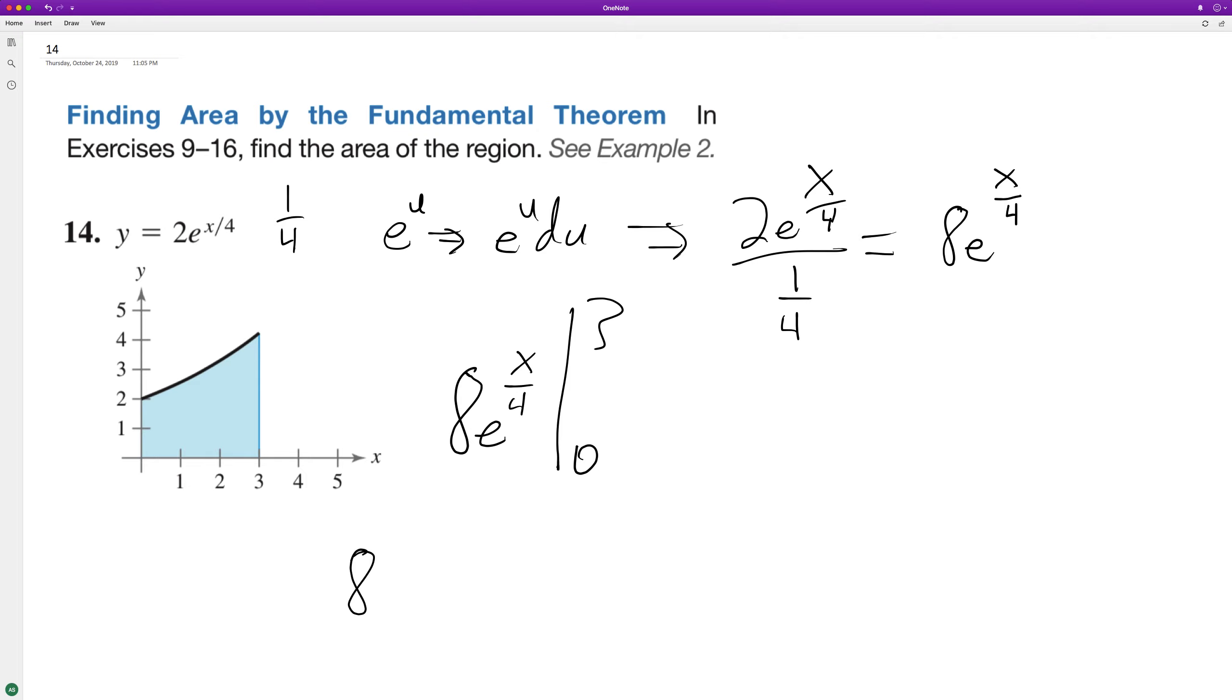So 8 quantity e raised to the 3 over 4 minus 8 e raised to the 0. And anything raised to the 0 is just 1. So it just becomes 8 times 1, which is 8.